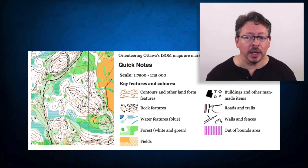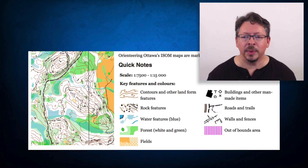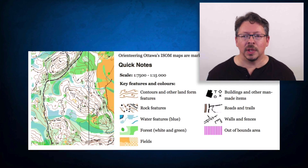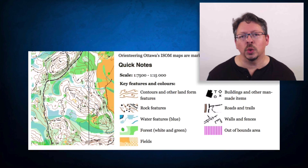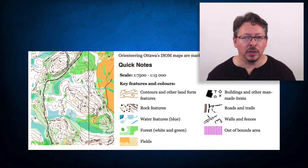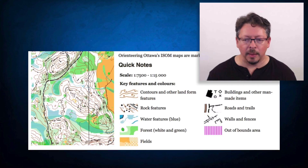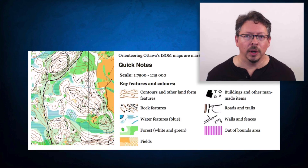If you're into orienteering, you need a different kind of map. Orienteering is where you use a map and a compass to navigate on foot from point to point across terrain that's usually unfamiliar to you, and the goal is to hit all your targets in the shortest time. You need detailed information about the terrain to do this, so the map includes information about contours and landforms and rock features and waterways and buildings and walls and fences and out-of-bounds areas and so on.